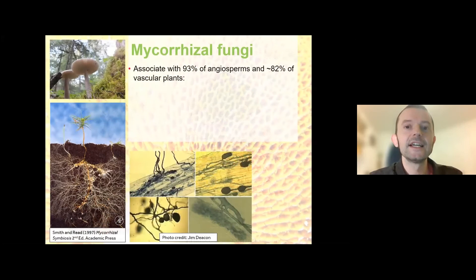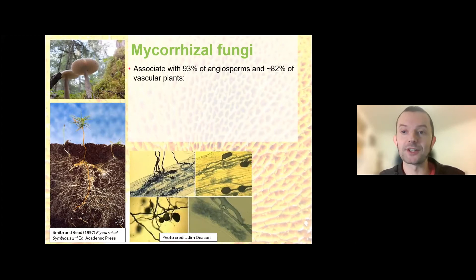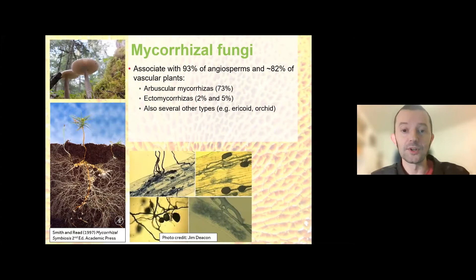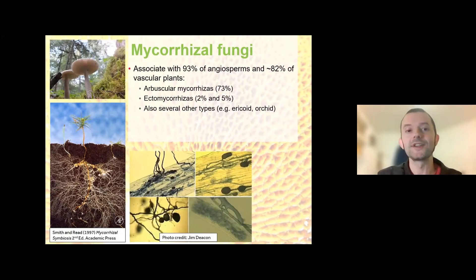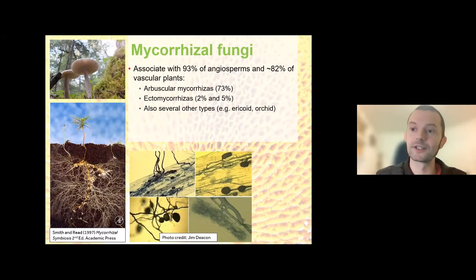Mycorrhizal fungi associate with about 93% of angiosperms and 82% of vascular plants. We now know there are types of mycorrhizas that associate with non-vascular plants as well. Arbuscular mycorrhizas associate with a much higher diversity of species; ectomycorrhizas associate with fewer species, but those species often have very large distributions. There are also many other types — ericoid mycorrhizas, orchid mycorrhizas, and so on.